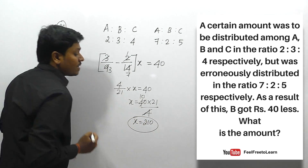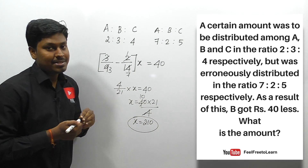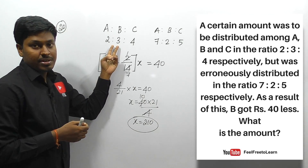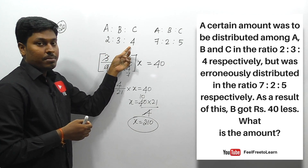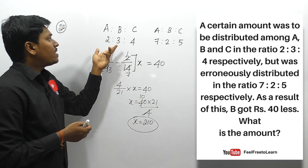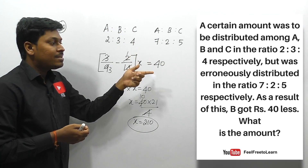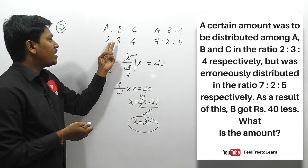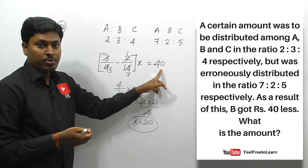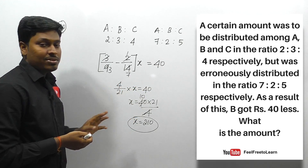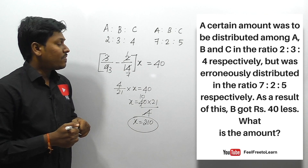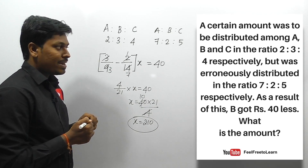So x equals 210, which is the total amount. The original distribution ratio was 2:3:4, but due to wrong distribution in ratio 7:2:5, B received 40 rupees less. The difference between the original and the wrong distribution amount for B is 40 rupees. The final answer for question 20 is 210.